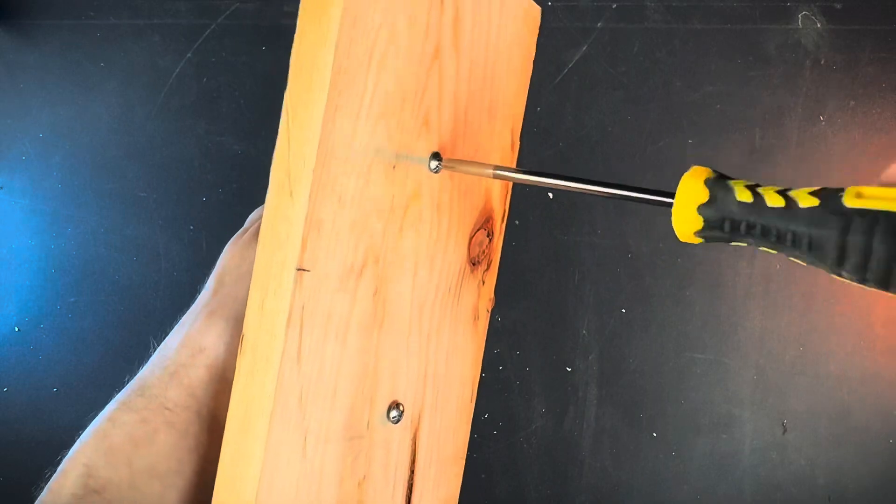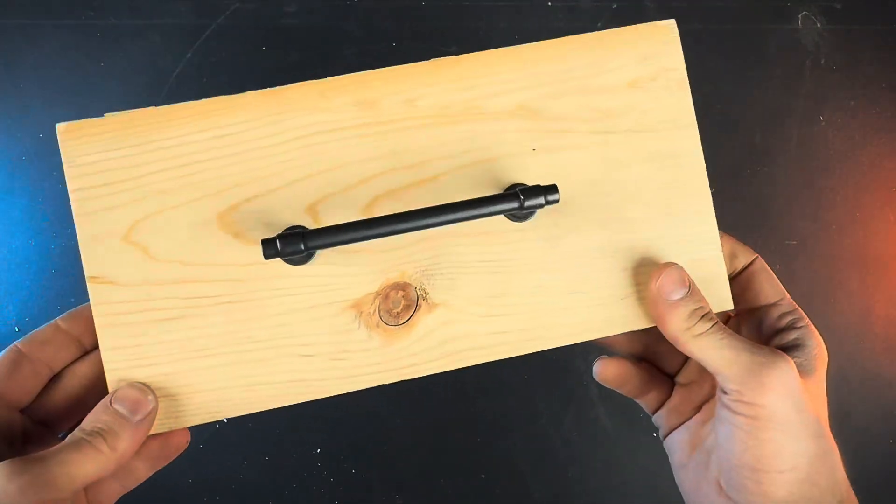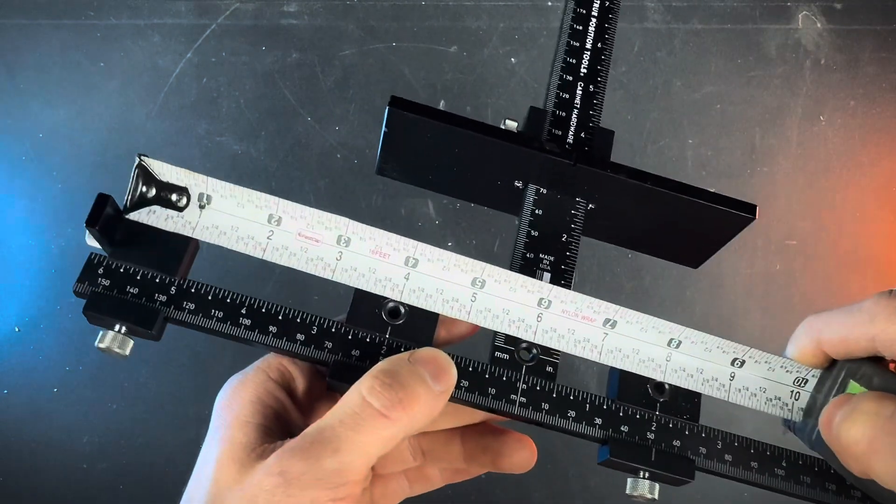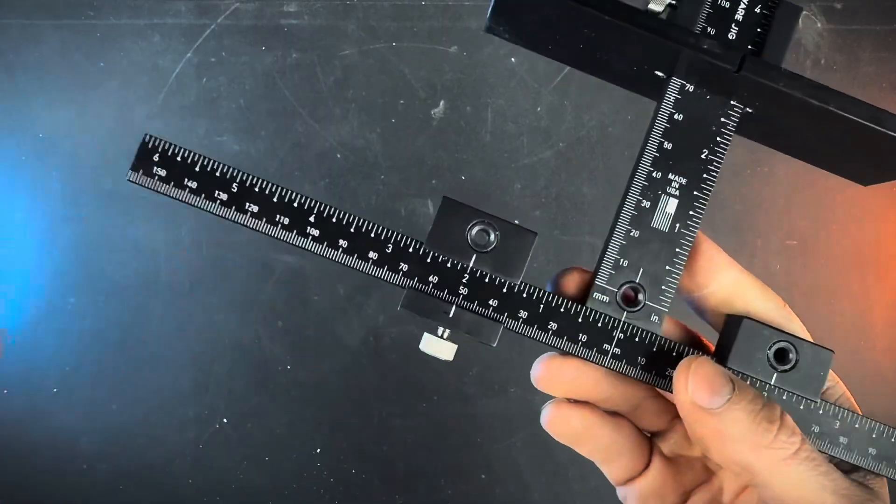Then it's all ready to put your handle on and screw in the screws. That was super easy and now we've got a perfectly centered handle. Now this jig can only line up handles for drawers that are 12 inches wide.